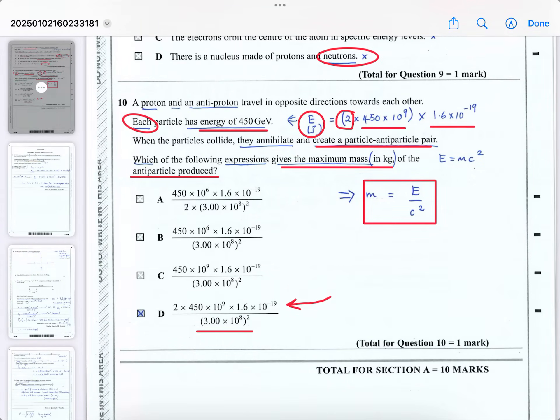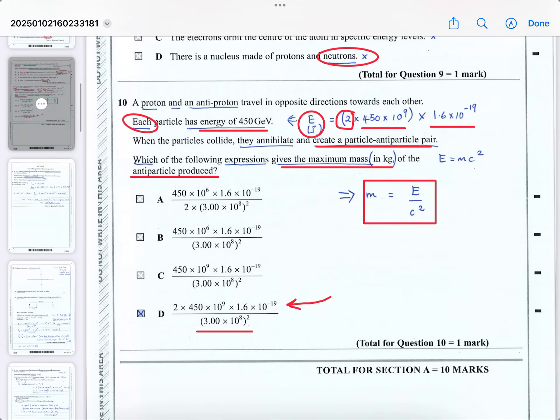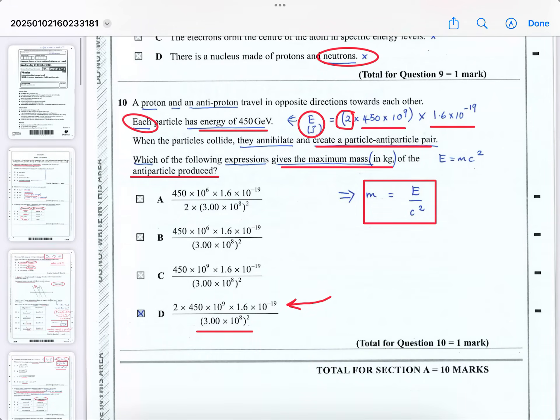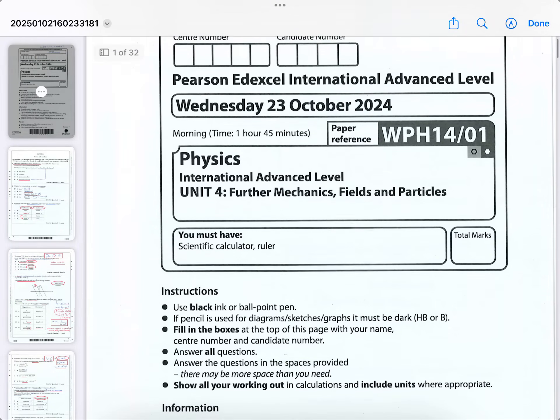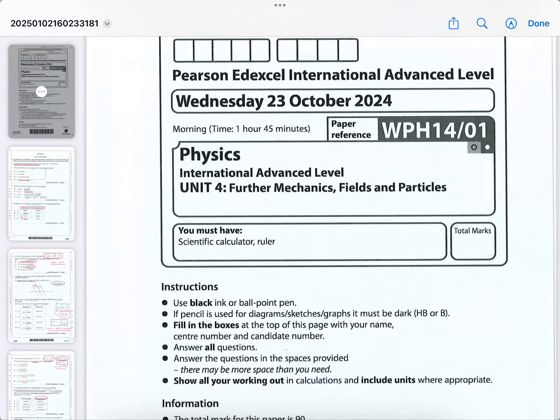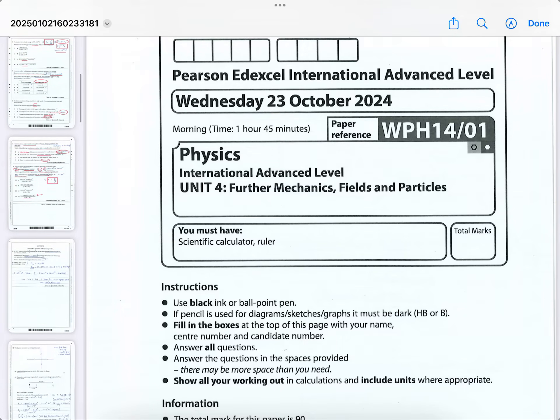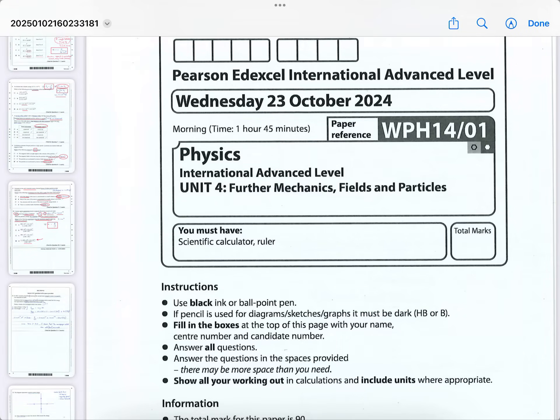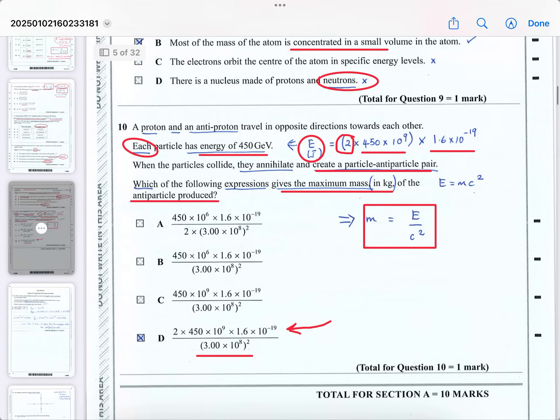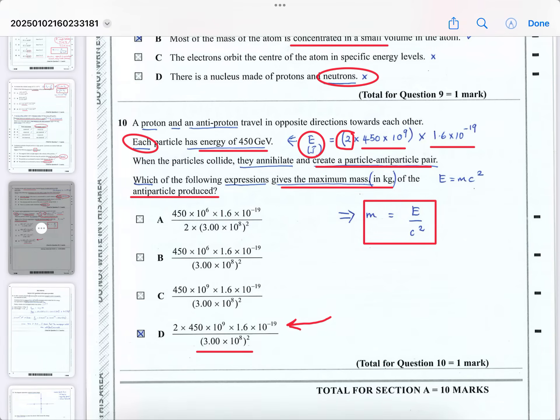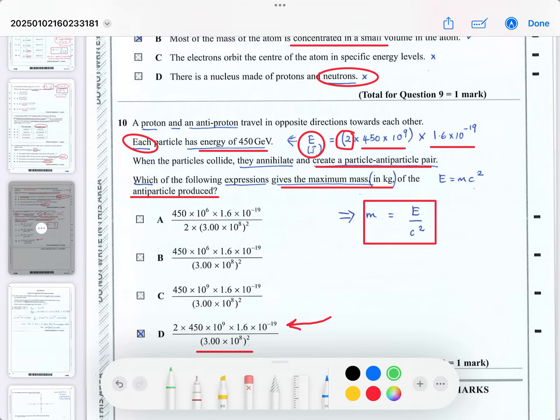I'm just going to go through the second part of this run through of the October 2024 exam for Unit 4, which a lot of you have been asking about. This is for Further Mechanics, Fields and Particles, and it's for the International Edexcel A Level. I did warn you that I may have made a mistake in the last multiple choice question. I went and checked, and sure enough, I have missed a factor of 2 in question 10. So the answer should not be D, but it should be C.